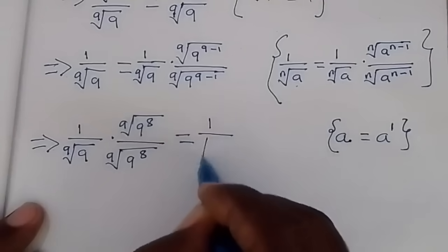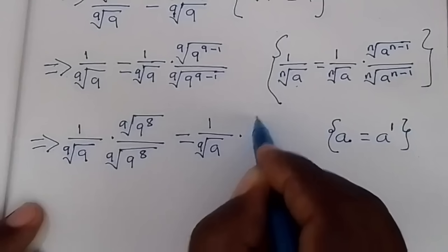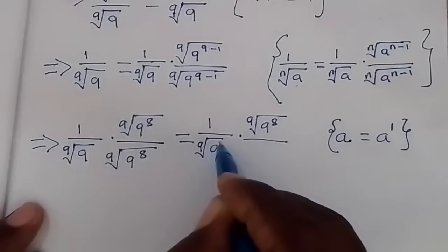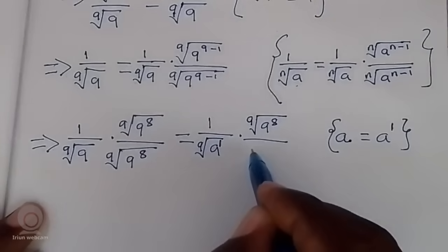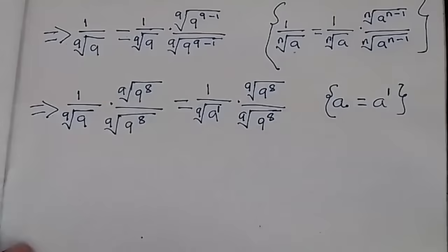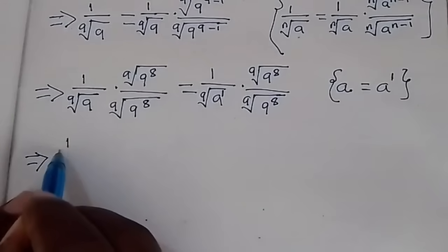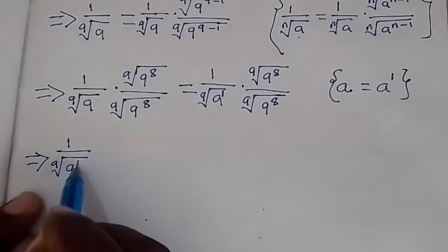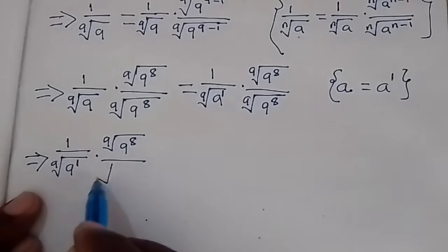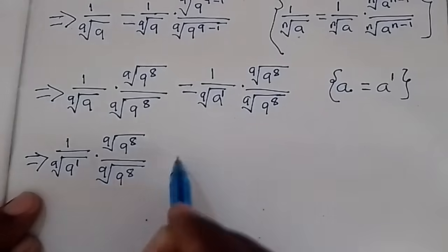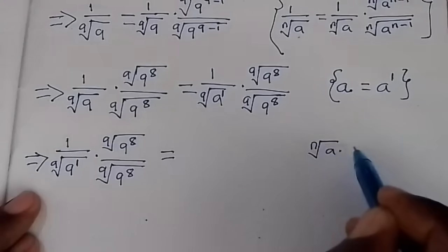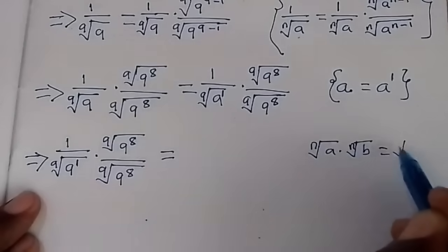So this becomes 1 over the 9th root of 9 times the 9th root of 9 to power 8, over the 9th root of 9 to power 8. On the denominator, we apply the rule that the 9th root of A times the 9th root of P is the same as the 9th root of AP.